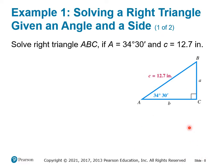Let's look at a right triangle ABC. We have a measure for angle A and a measure for side c. We still have to find the measures for angle B, angle C, and sides a and b.